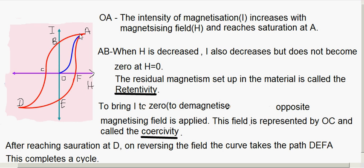To recap: OA represents the initial magnetization — when H is increased, I also increases. At point A, the specimen reaches saturation, meaning further increase in H produces no increase in I. Even when the magnetizing field is removed completely, there is still residual magnetism left in the material, and this residual magnetism is called retentivity.